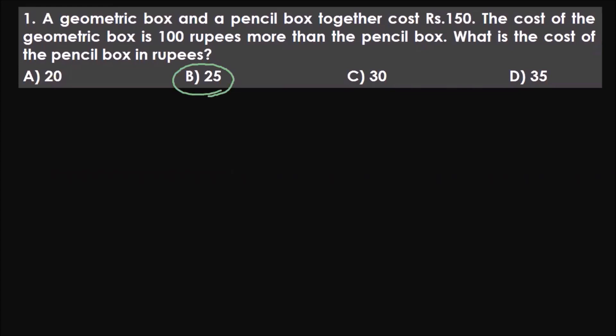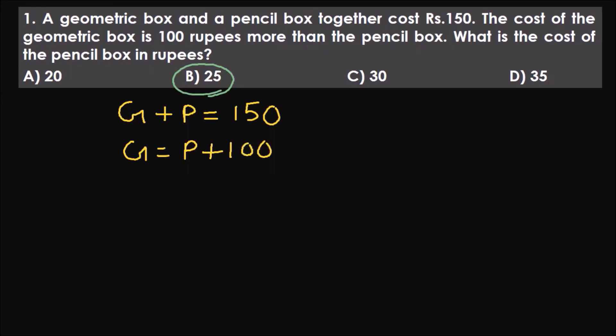A geometry box and a pencil box together cost 150 rupees. Let's take the geometry box as G and the pencil box as P. They both add up to 150 rupees. The cost of the geometry box G is 100 rupees more than the pencil box, so G equals P plus 100. We need to find the cost of the pencil box — fortunately it's already in terms of P.